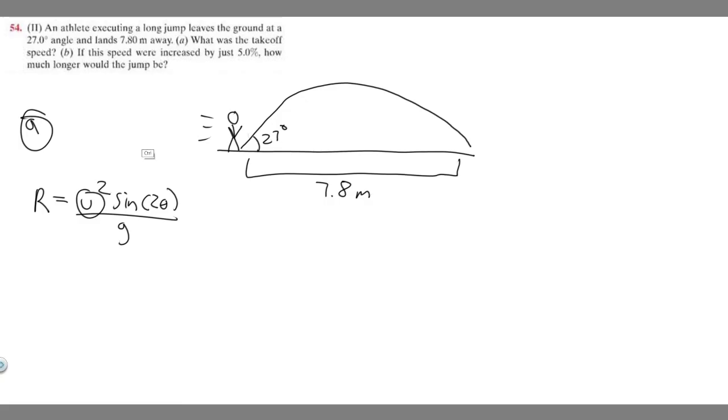So we're trying to find the takeoff speed for the first one. What we need to do is solve for U. If we manipulate this equation to get it in terms of U, we can multiply both sides by g and then divide by the sine of 2 theta. You'll get U squared equals R times g over the sine of 2 theta. So let's plug everything in and actually solve.